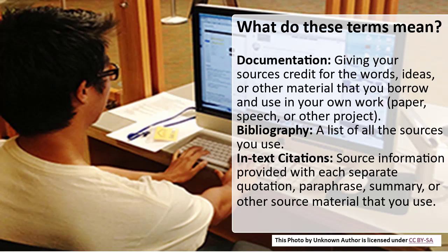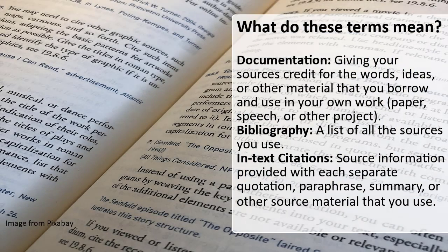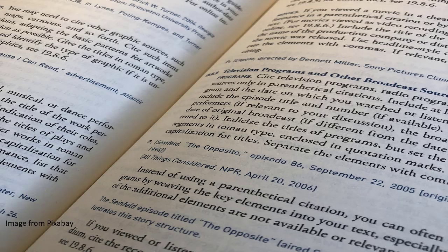Bibliography: a list of all the sources you use. In-text citations: the source information provided with each separate quotation, phrase, paraphrase, summary, or other source material that you use. Providing documentation in the form of a bibliography and in-text citations is the opposite of plagiarism, and both are required for complete and correct documentation.